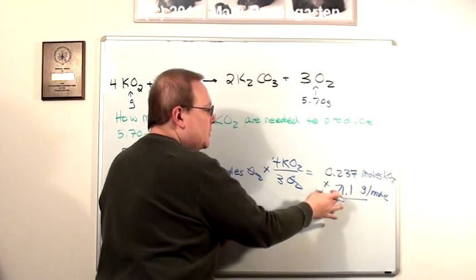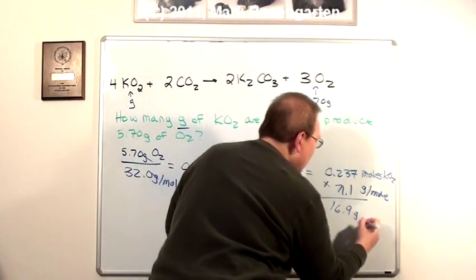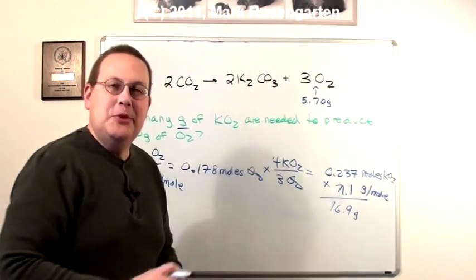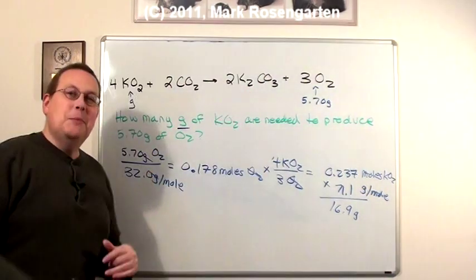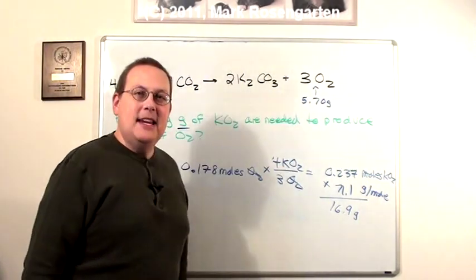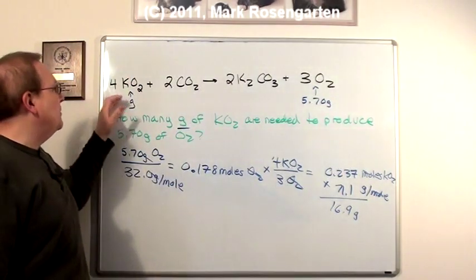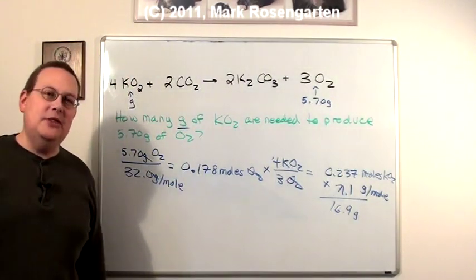3 sig figs, 3 sig figs, so to 3 sig figs, 16.9 grams of potassium superoxide. So once more to sum up, if you've got 5.70 grams of oxygen to make, it's going to require a minimum of 16.9 grams of potassium superoxide to get the job done.